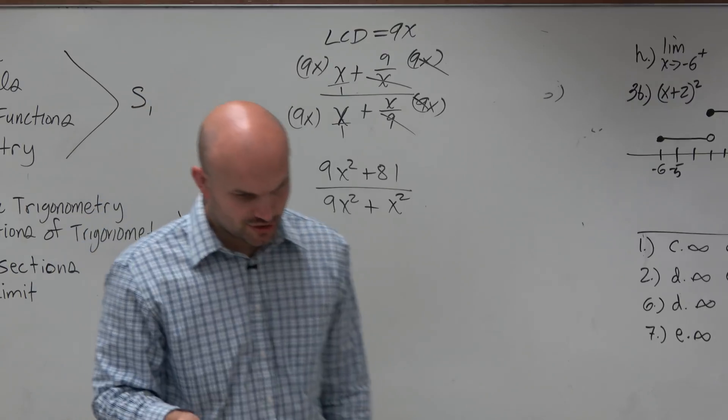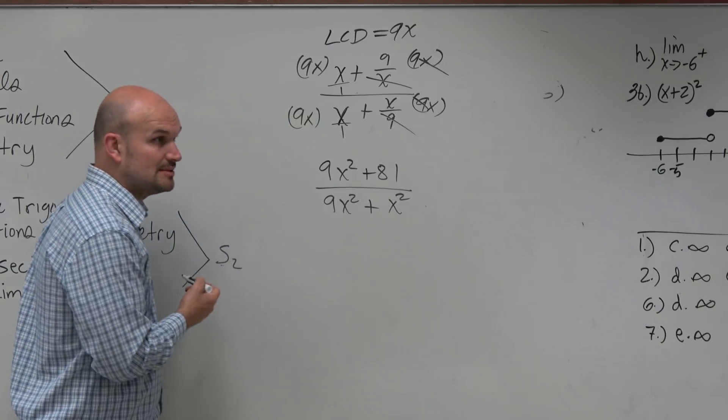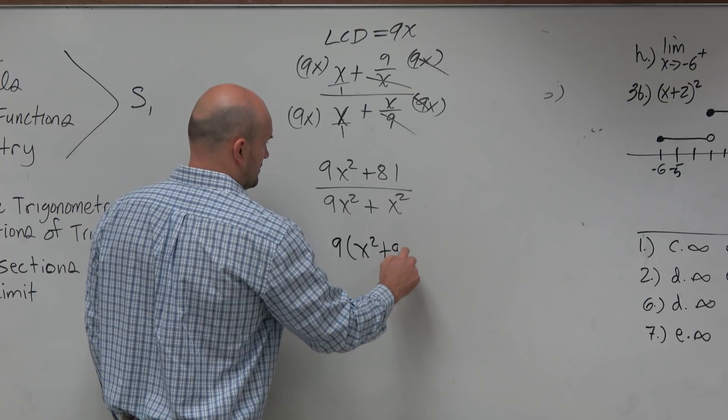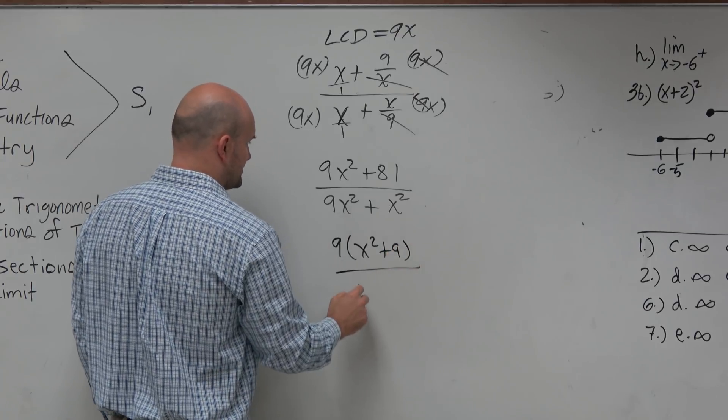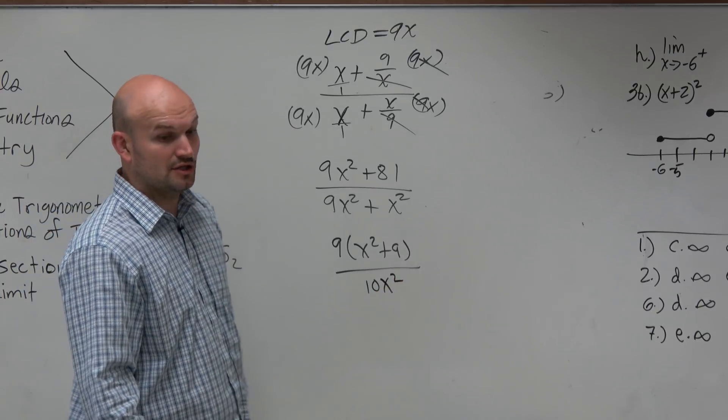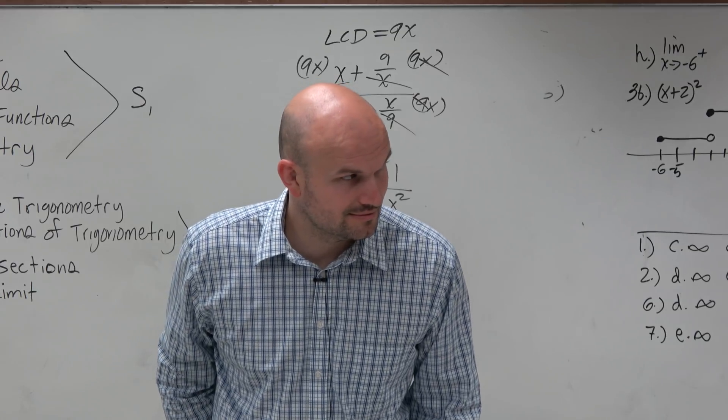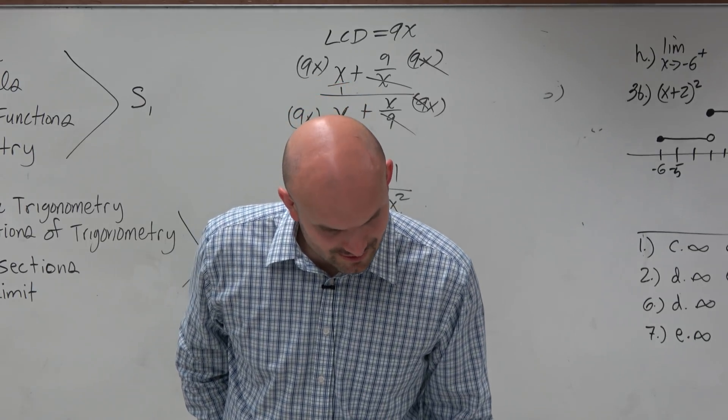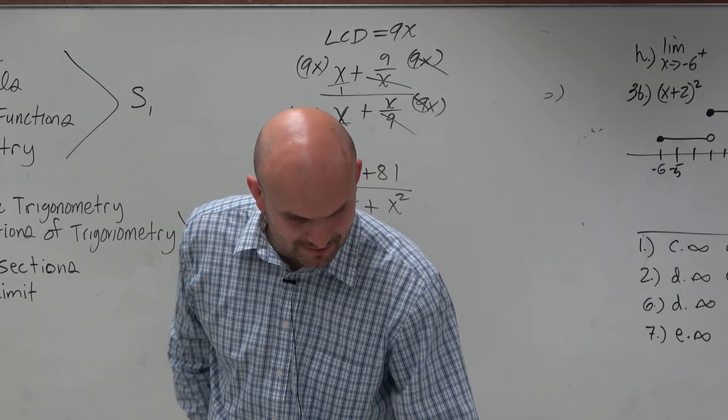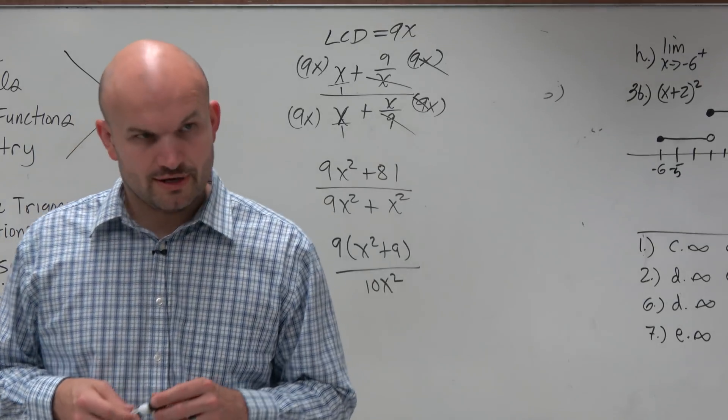So I go and look at my answer choice, and I see, is that an answer choice? No. But I do recognize that I can do some simplifying, right? I can factor out a 9 here. And here I could factor out, I could combine these to a 10x squared. And then I look, is that an answer choice? No. Is that answer C? Oh, actually, I didn't even need to do that. I could have saved myself some time. But it's answer choice C, right? So there you go.